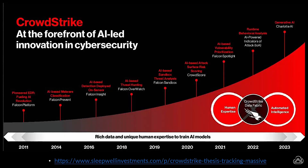Their portfolio has grown a lot over the past few years. In 2014 they introduced the Prevent module, in 2016 they introduced Falcon Insight, and in 2018 they started working with threat hunting through Falcon Overwatch, which became a staple in the industry. Since then, a lot of other innovations have been introduced into the platform.